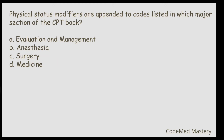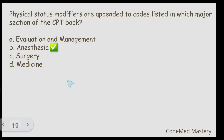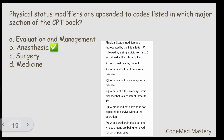Next question: Physical status modifiers are appended to codes listed in which major section of the CPT book? Option A: E&M. Option B: Anesthesia. Option C: Surgery. Option D: Medicine. The right answer is Anesthesia. While coding for anesthesia, physical status modifiers such as P1, P2, P3, P4, P5, and P6 are used, as mentioned in the anesthesia guideline section.